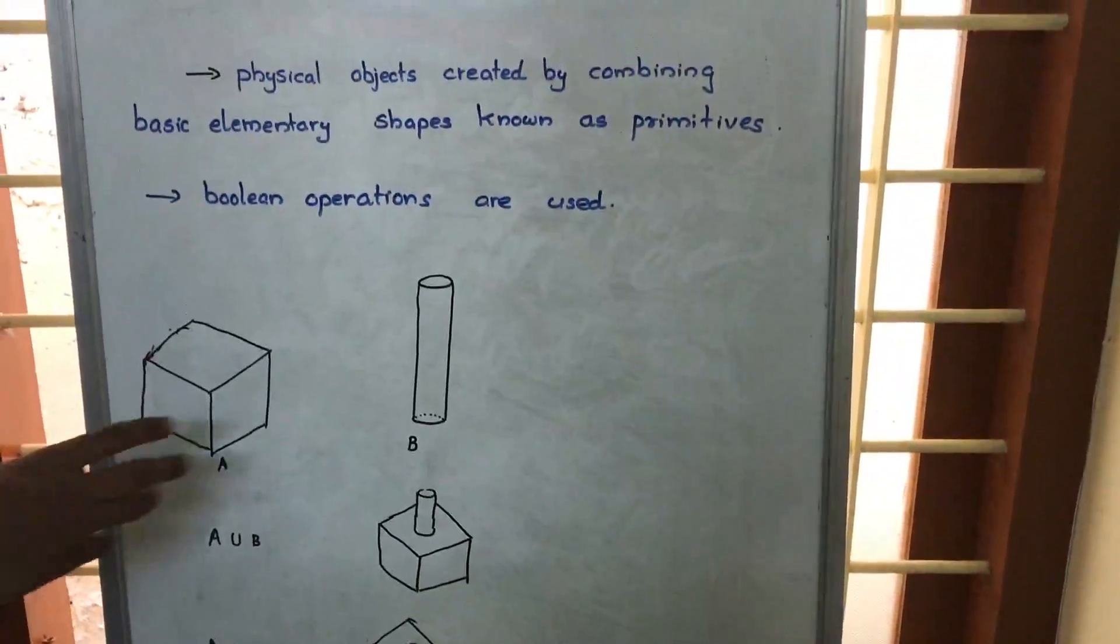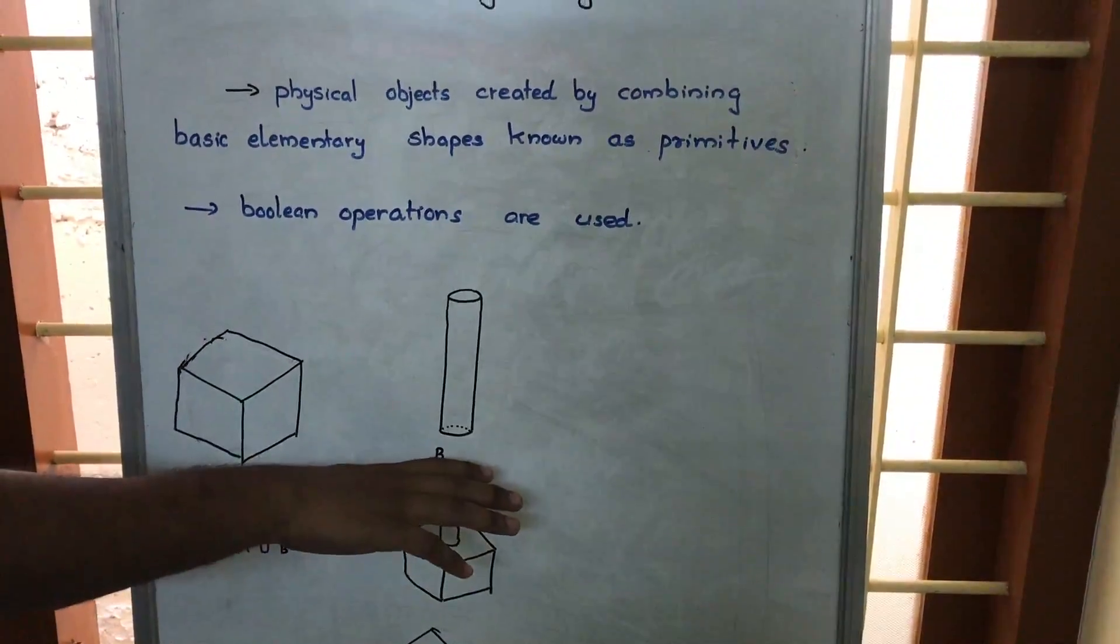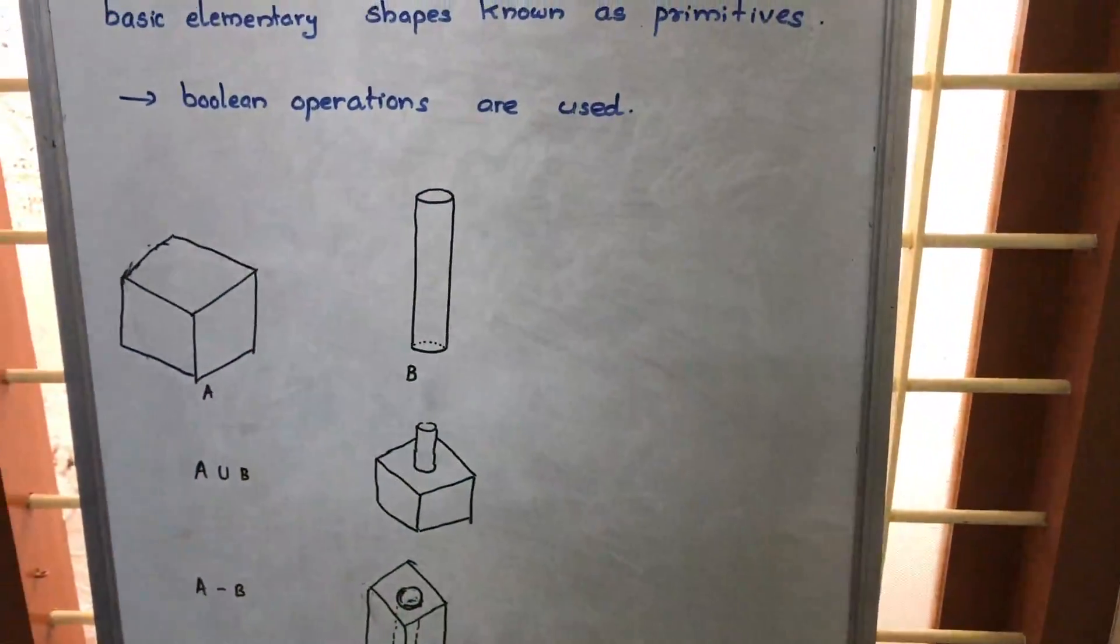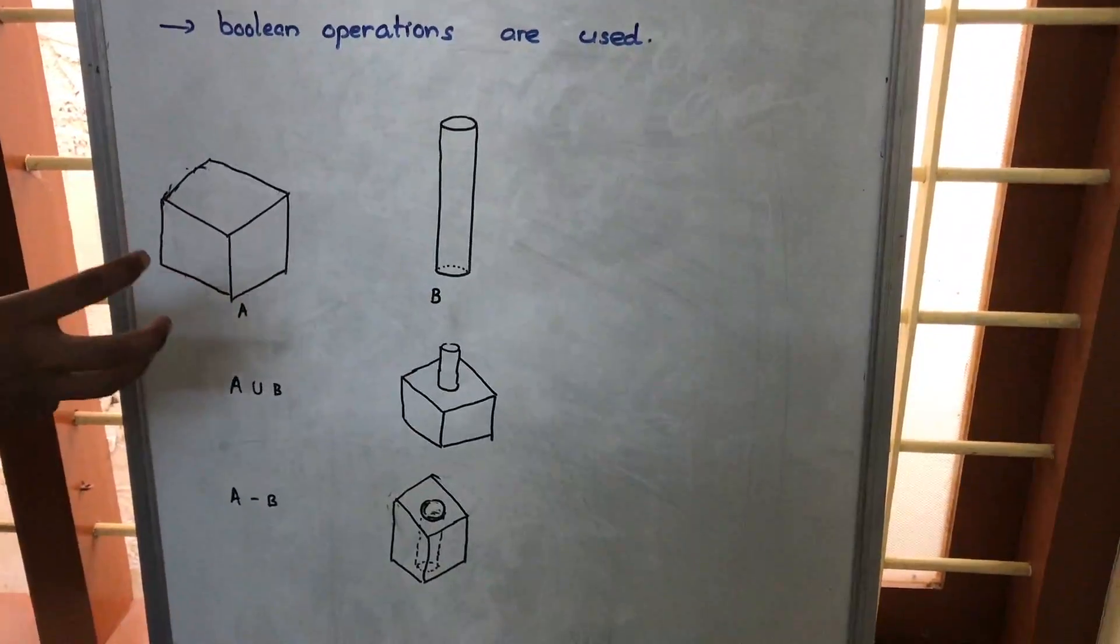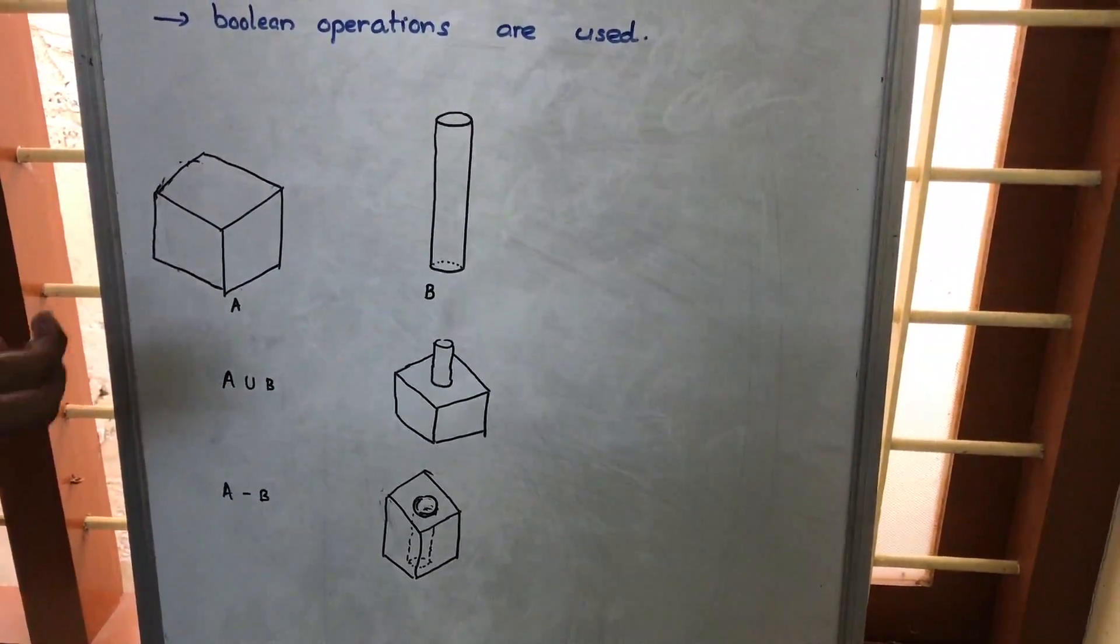Here, let's say that this is A. A is a block, B is a cylinder, and these two are two primitives. Now we are using Boolean operations to join these two primitives and obtain some complex models.